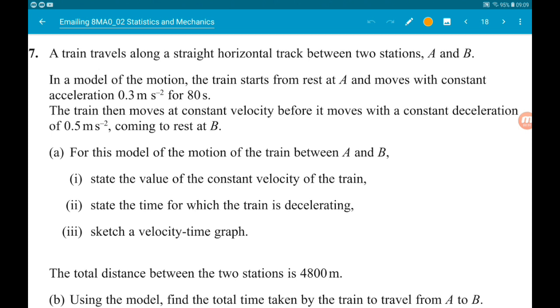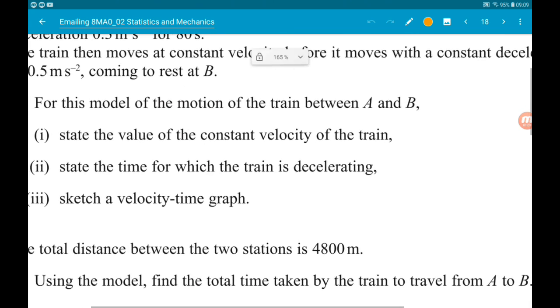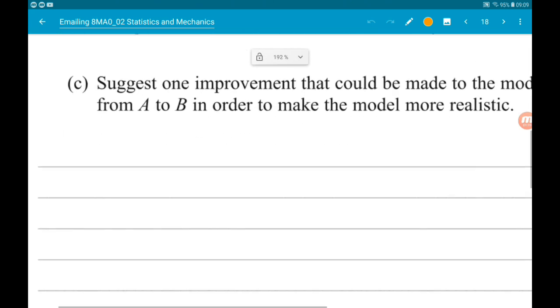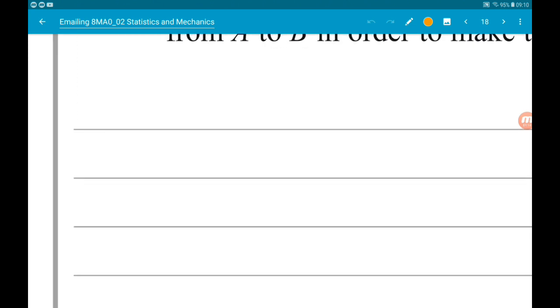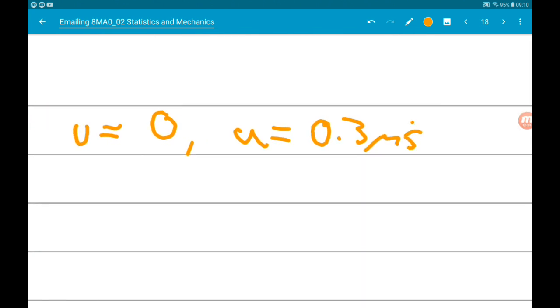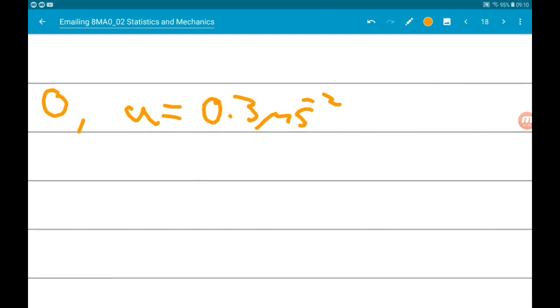Part A says for this model of the motion of the train between A and B, part one, state the value of the constant velocity of the train. Okay, so for part A of one, we know that u is equal to zero, we know the acceleration is 0.3 meters per second squared, and we know the time that it's doing that for is 80 seconds.